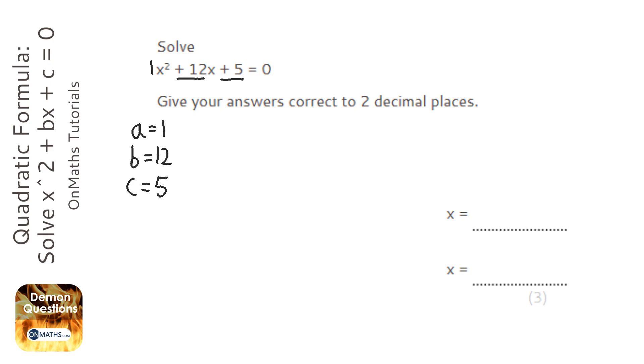Now, the quadratic formula, you need to know off by heart, it's minus b plus minus the square root of b squared minus 4ac over 2a.